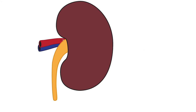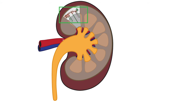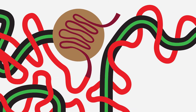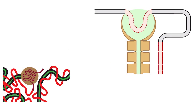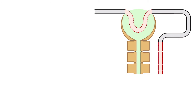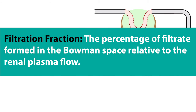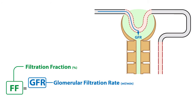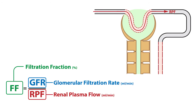When talking about filtration fraction, we need to focus on the part of the kidney involved in filtration, and that's the glomerulus. Filtration fraction is defined as the percentage of filtrate formed in the Bowman space relative to the renal plasma flow. In other words, the filtration fraction equals the glomerular filtration rate in milliliters per minute, or GFR, divided by the renal plasma flow in milliliters per minute, or RPF, multiplied by 100.